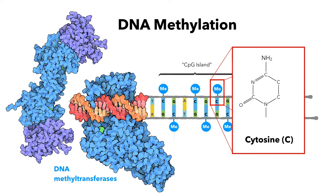Methyl groups are almost always added to cytosine bases with these sequences, CG and GC. Notice that both strands have a cytosine, so in a methylated region of DNA, both strands will have a methyl group. When the DNA is replicated, each of the new DNA double helices will have one old strand complete with methyl groups, and one strand which is not methylated. So DNMT1 just needs to look for CG base steps where only one strand has a methyl group.